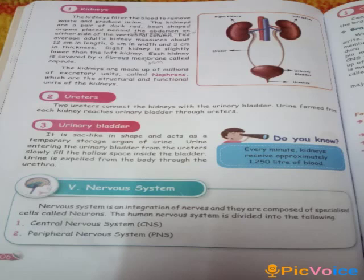The urinary bladder is sock-like in shape and acts as a temporary storage organ of urine. Urine entering the urinary bladder from the ureters slowly fills the hollow space inside the bladder. Urine is expelled from the body through the urethra.